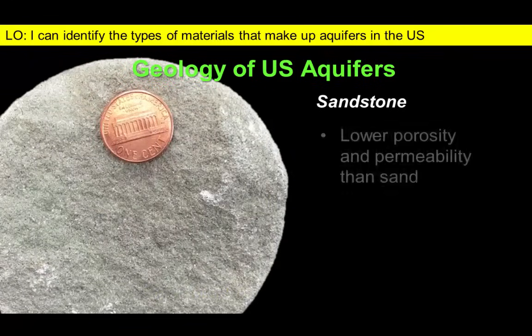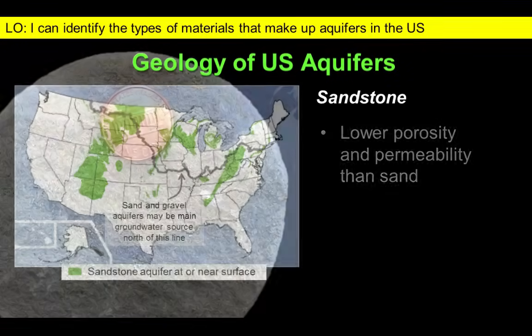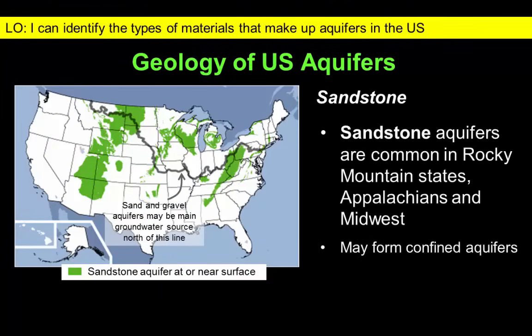In comparison to loose sand, sandstone has been compacted and its grains have been cemented together. This reduces the porosity of the original sand deposit, but it still represents a pretty good choice for an aquifer in many locations. Sandstone aquifers are common in western states, parts of the Midwest, and throughout the Appalachians. The line on the map represents the southern edge of glacial deposits. North of this line, sand and gravel are more likely to serve as the primary groundwater source than sandstone.